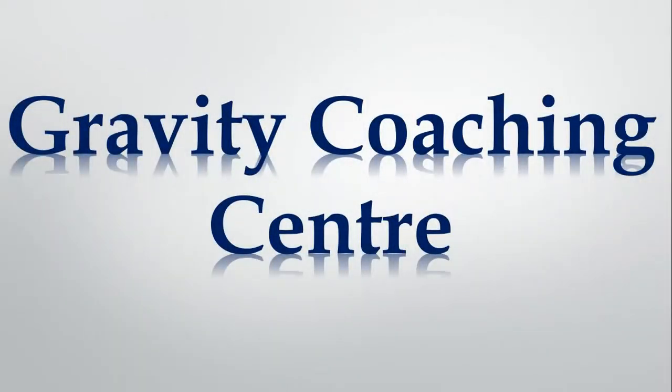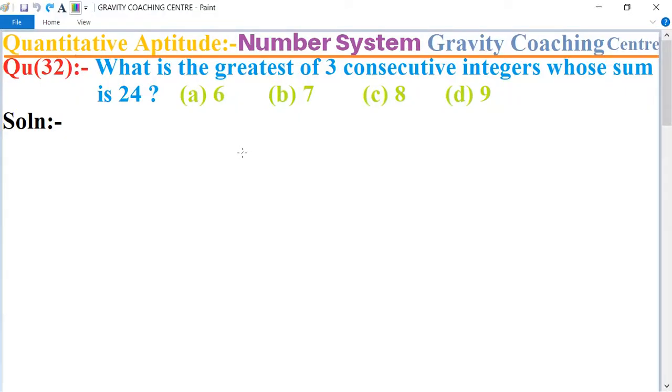Welcome to our channel Gravity Coaching Centre. Quantitative Aptitude, chapter Number System, question number 32: What is the greatest of three consecutive integers whose sum is 24? In this question, first of all we let the three consecutive numbers...